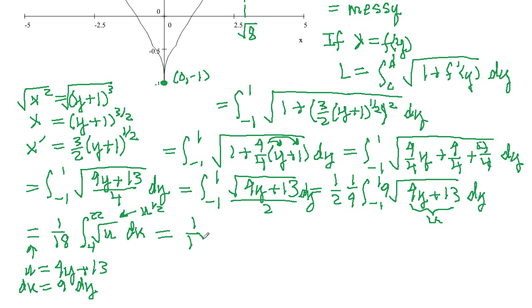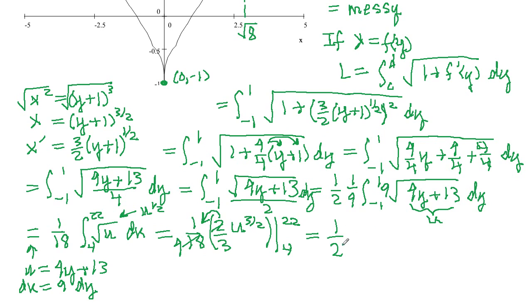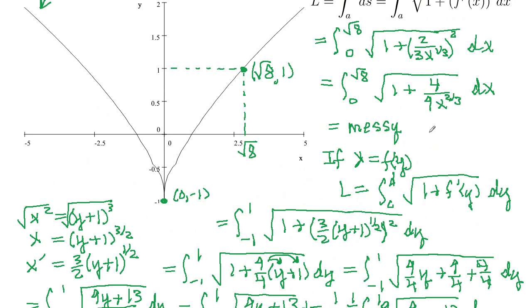So this will be 1/18 times u to the 3/2, and dividing by 3/2 is the same as multiplying by 2/3, evaluated from 4 to 22. The 2/3 can be factored out, the 2 cancels into the 18 giving 1/27. So we get 1/27 times (22 to the 3/2 minus 4 to the 3/2), which is an exact numerical answer. In this case it was easier to find the arc length by integrating with respect to y — so if you get a really messy integral with respect to x, try integrating with respect to y using this formula.